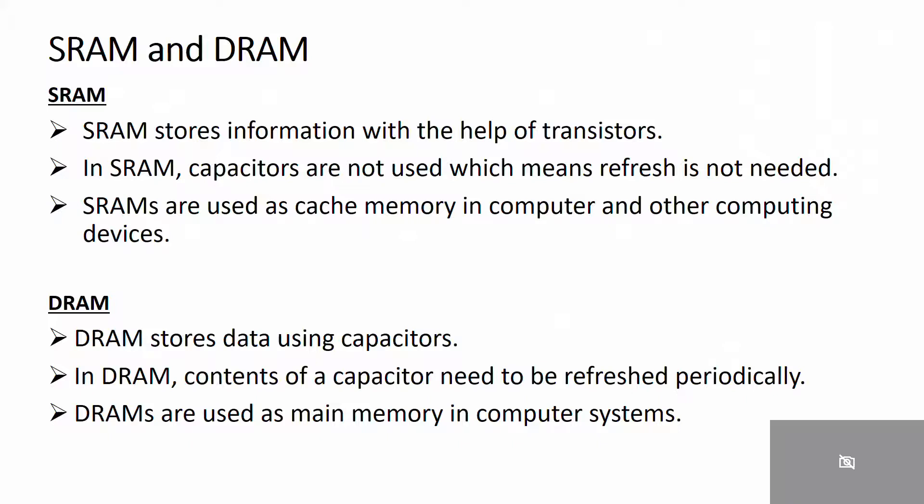DRAM is used to store data by using capacitors. In DRAM, the contents of the capacitors need to be refreshed periodically. DRAM provides slower speed of data read-write and DRAM consumes less power than SRAM.